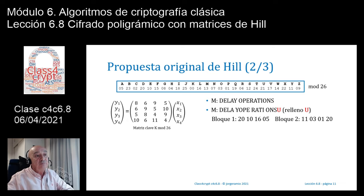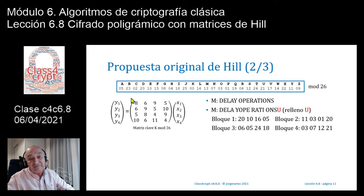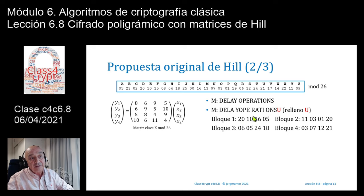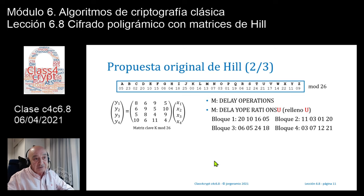Buscamos en el alfabeto especial de Hill los códigos de D, E, L, A: la D es 20, la E es 10, la L es 16 y la A es 5. Así el primer bloque de cifras sería X1=20, X2=10, X3=16, X4=5. Hacemos lo mismo para los distintos tres bloques. En el último bloque aparece la letra U como relleno, que corresponde al número 21.